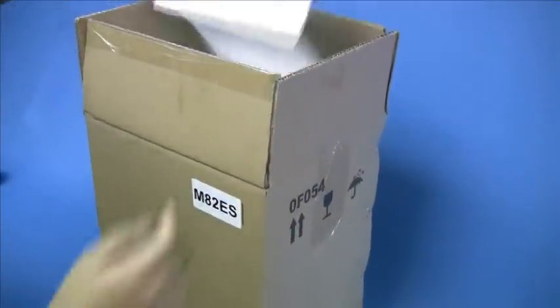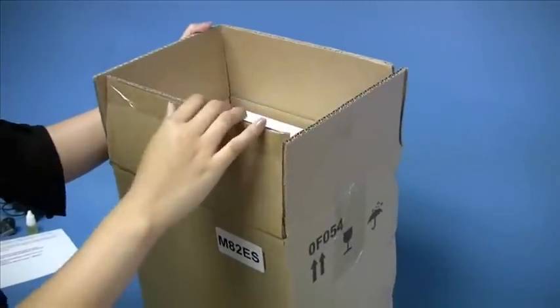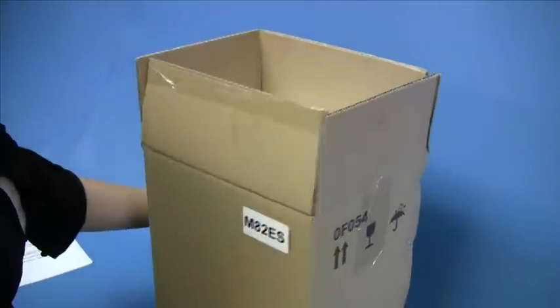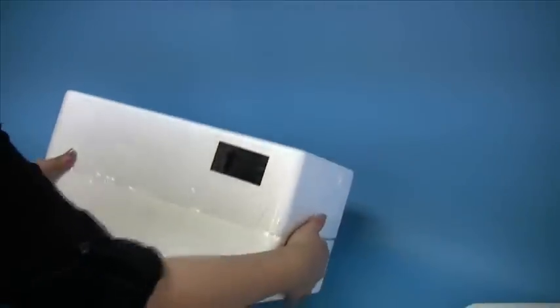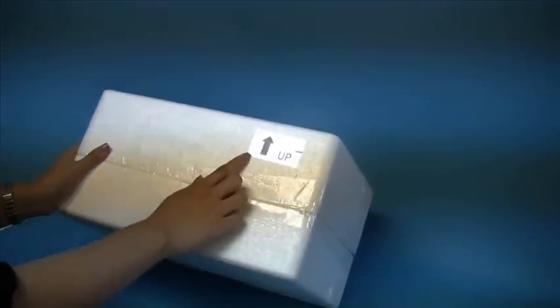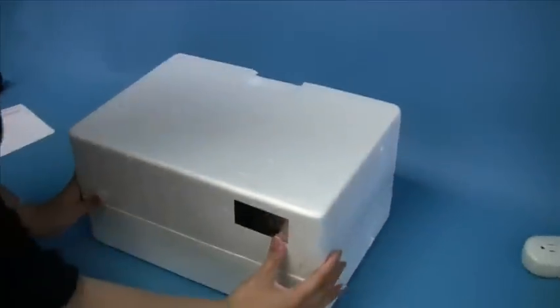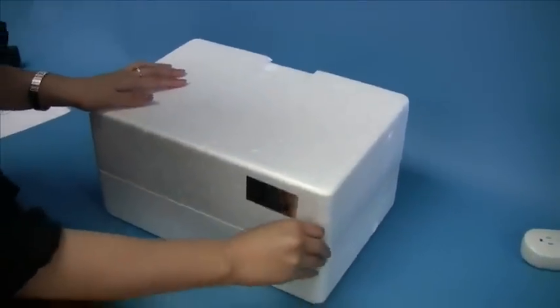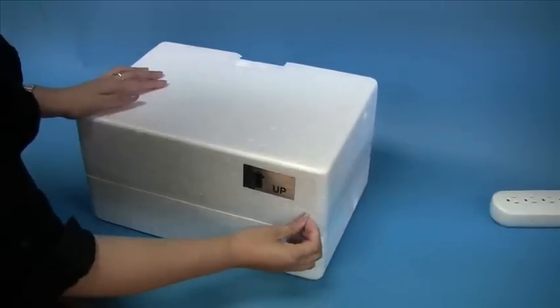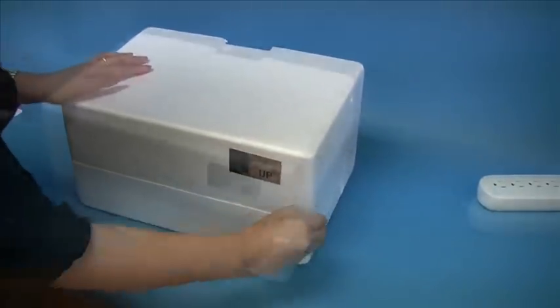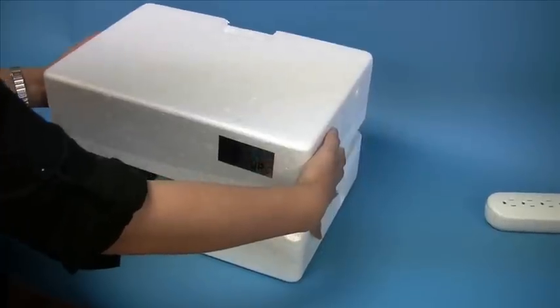Inside, you should have a cushion letter that has a link to the instruction manual. Make sure to keep it and not discard it. Now take out the styrofoam container in the box. Make sure to find the up sign with the arrow pointing upward on the styrofoam container and open it. Move the cover very gently and carefully.